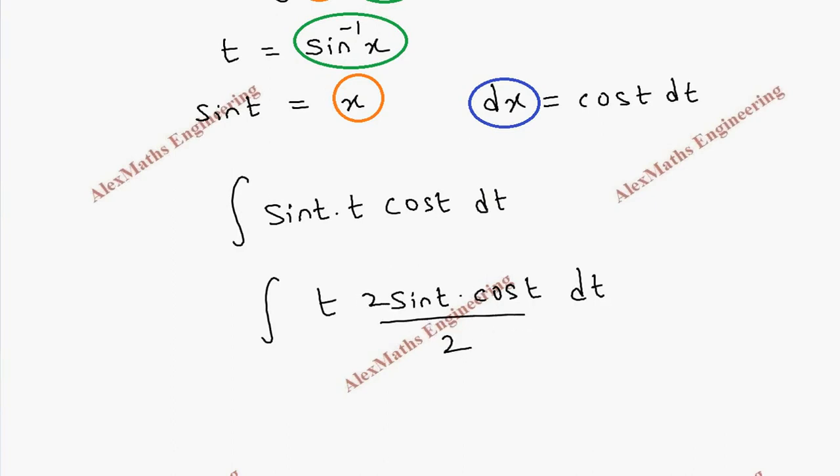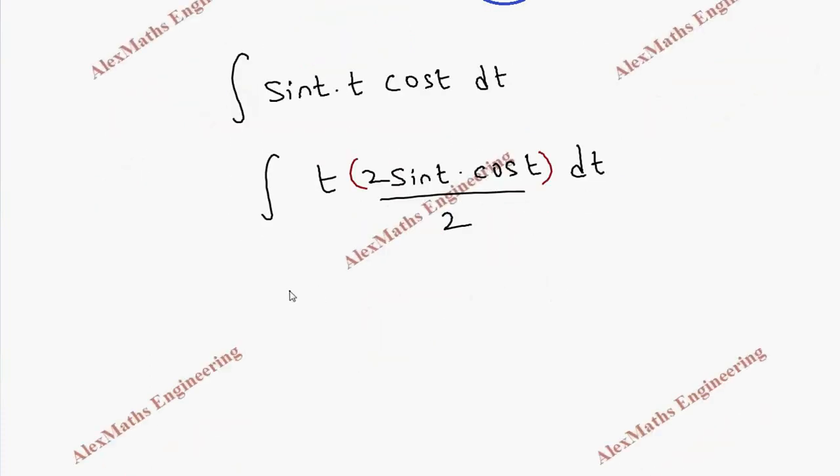This entire term is the sine 2t formula, so we have integral t into sine 2t. This 2 in the denominator, let's keep it as half outside dt.